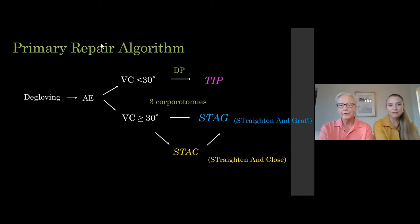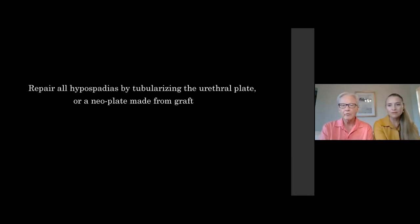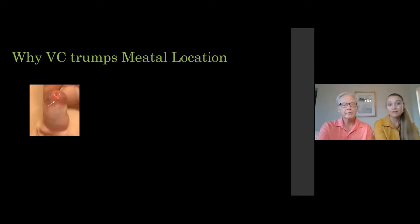Here is our algorithm. We do two urethroplasties, but our decision making is not based on meatal location — it's based on ventral curvature. Less than 30 degrees of curvature, we'll do a TIP repair. More than 30 degrees, we do a STAG repair. We're going to do the urethroplasty by tubularizing the urethral plate or a neoplate made from graft, but we decide based on ventral curvature.